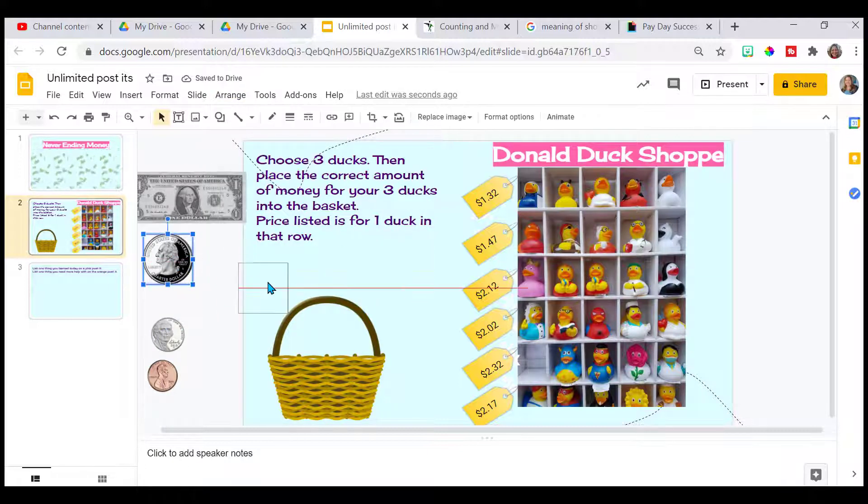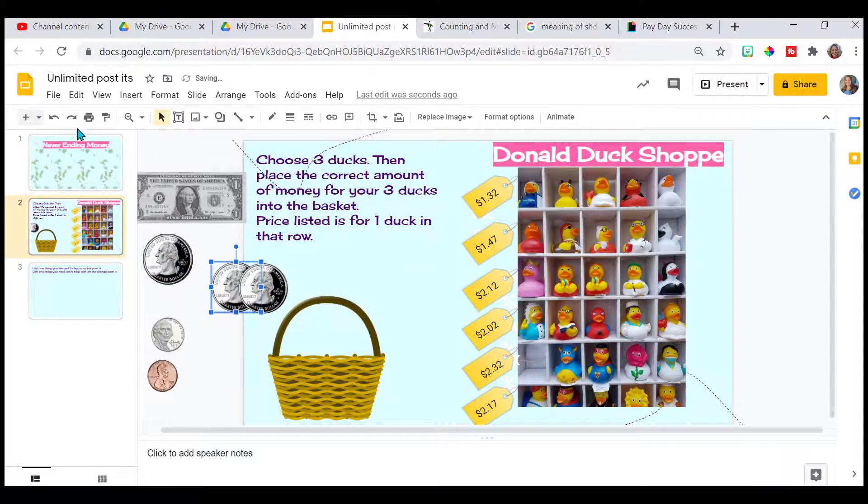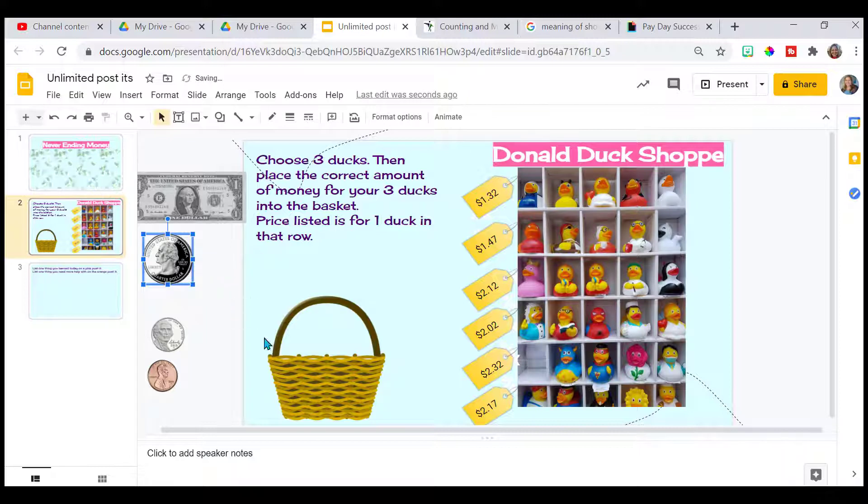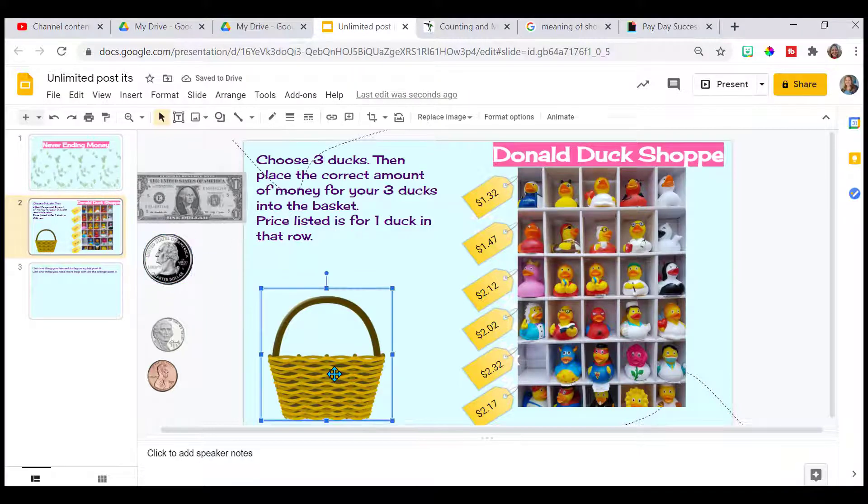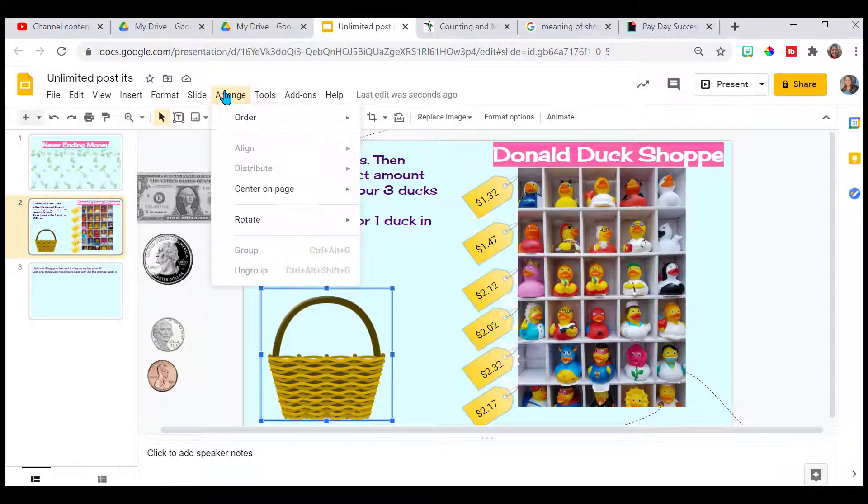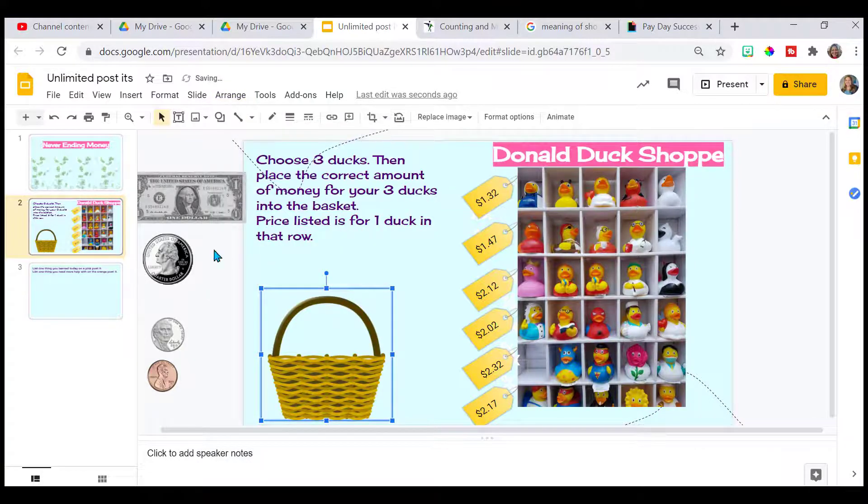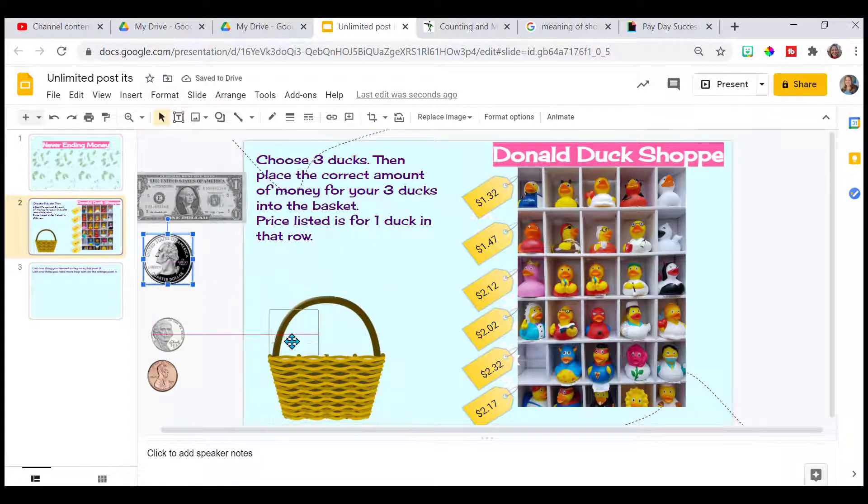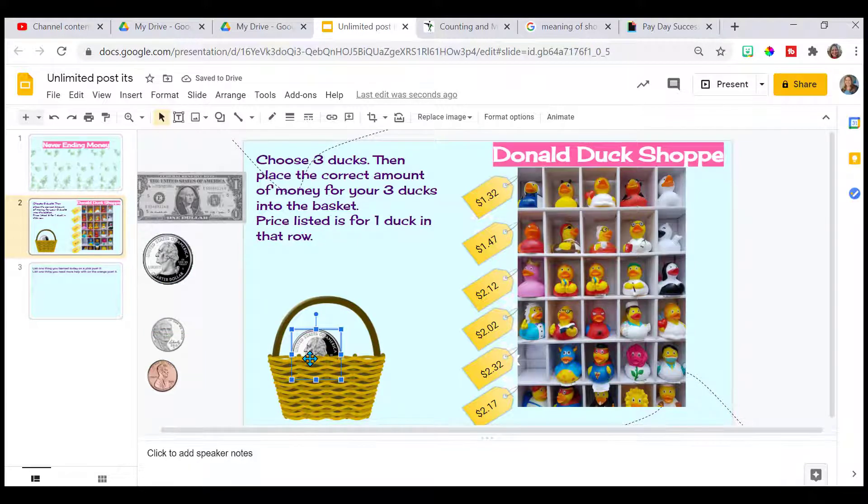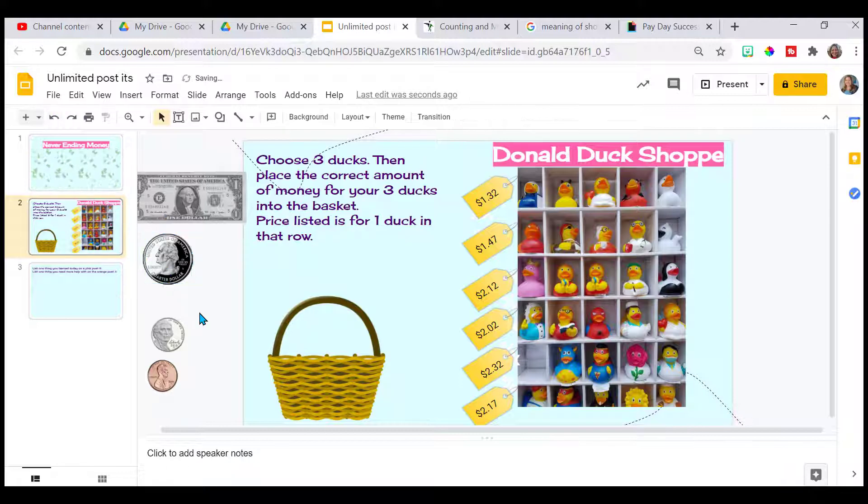Now your students can drag and drop and keep going and putting them in the basket. The only thing I still want to do is I want to make sure the basket is forward all the way forward. So I'm going to click on the basket. I'm going to go arrange, order, and I'm going to bring it all the way to the front. That way when I drag my money, it's going to go behind the basket. So it's going to appear to be in the basket.